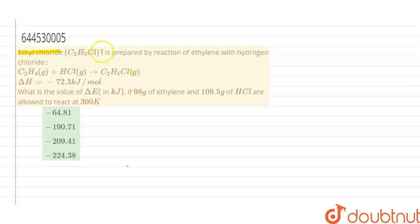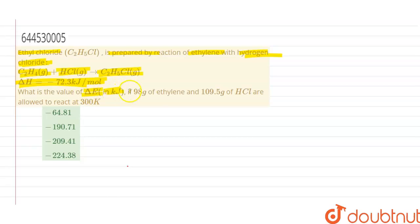The question given here is: ethyl chloride is prepared by the reaction of ethylene with hydrogen chloride, and the reaction is represented as C2H4 + HCl → C2H5Cl. The delta H value given is minus 72.3 kilojoule per mole, and we have to calculate the value of delta E in kilojoule. It is given that 98 grams of ethylene is reacting with 109.5 grams of HCl at 300 Kelvin.